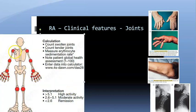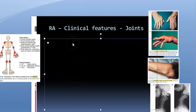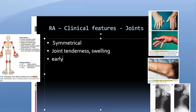The joints are swollen or tender symmetrically — right, left, right, left. There is symmetrical involvement of joints. You will see joint tenderness and joint swelling, and it will be symmetrical.